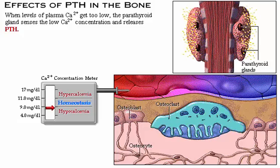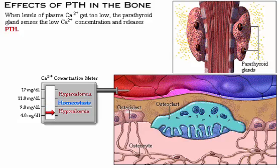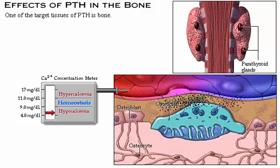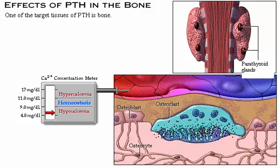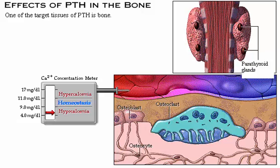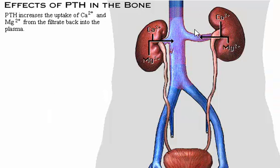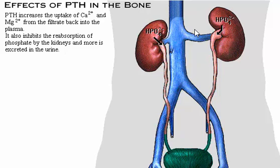When levels of plasma calcium get too low, the parathyroid gland senses the low calcium concentration and releases parathyroid hormone. One target tissue of parathyroid hormone is bone, where it increases the number and activity of osteoclasts, releasing calcium ion and phosphate into the plasma. The other target tissue is the kidney, where parathyroid hormone increases the uptake of calcium ion and inhibits reabsorption of phosphate, causing greater phosphate excretion in the urine.